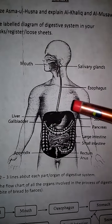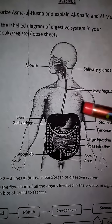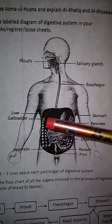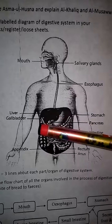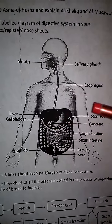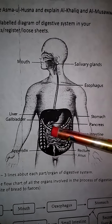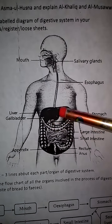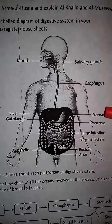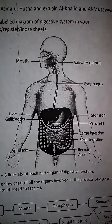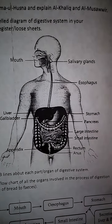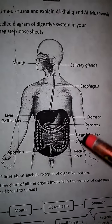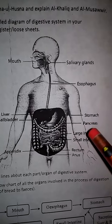Through this tract there is the presence of the liver and gallbladder. After that there is the J-shaped structure which is known as our stomach, which helps with the digestion of food.